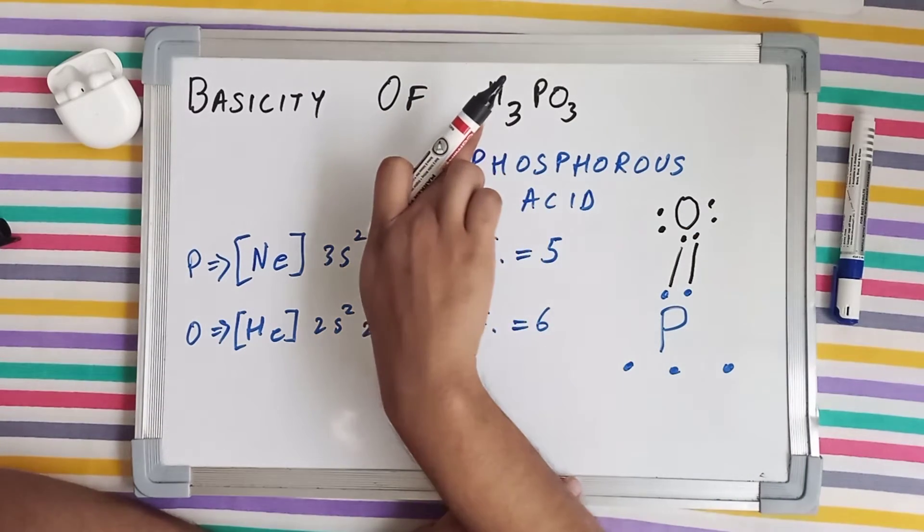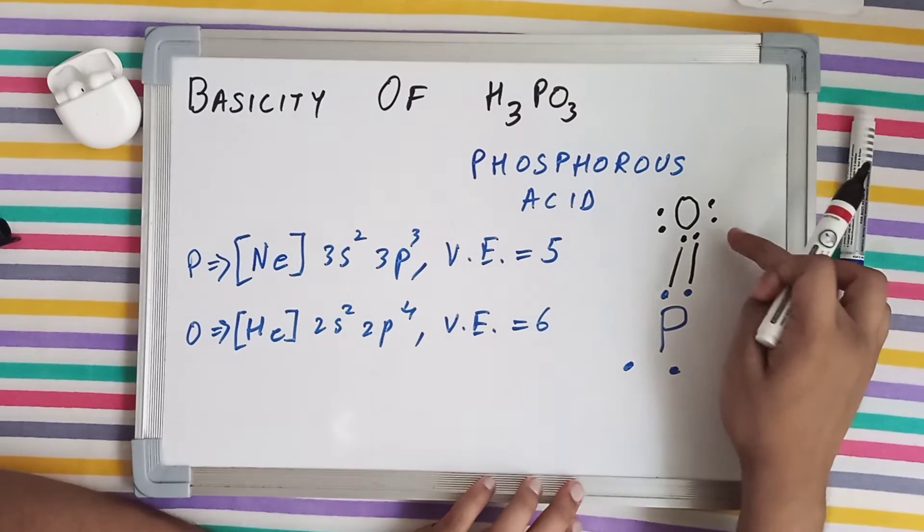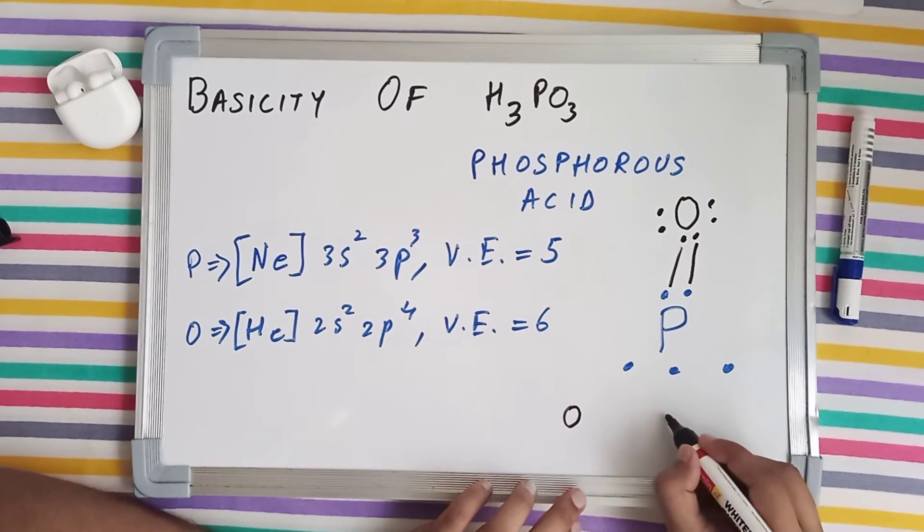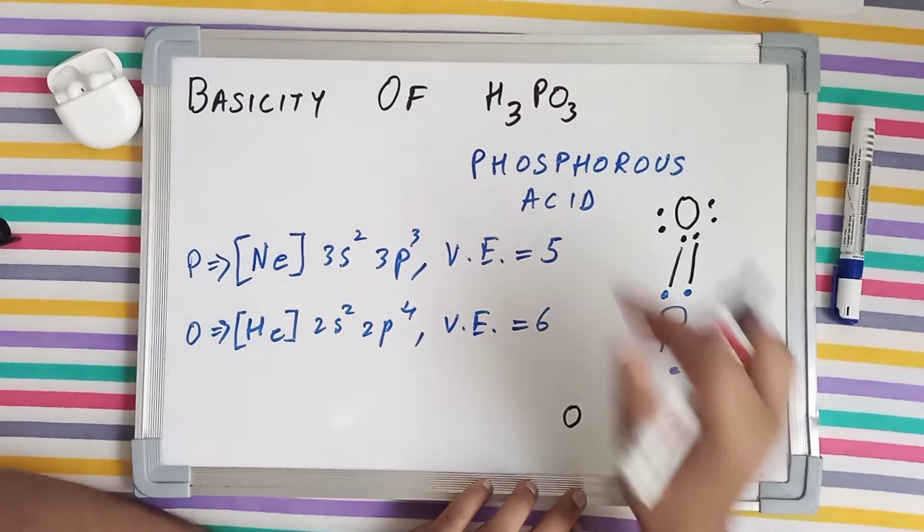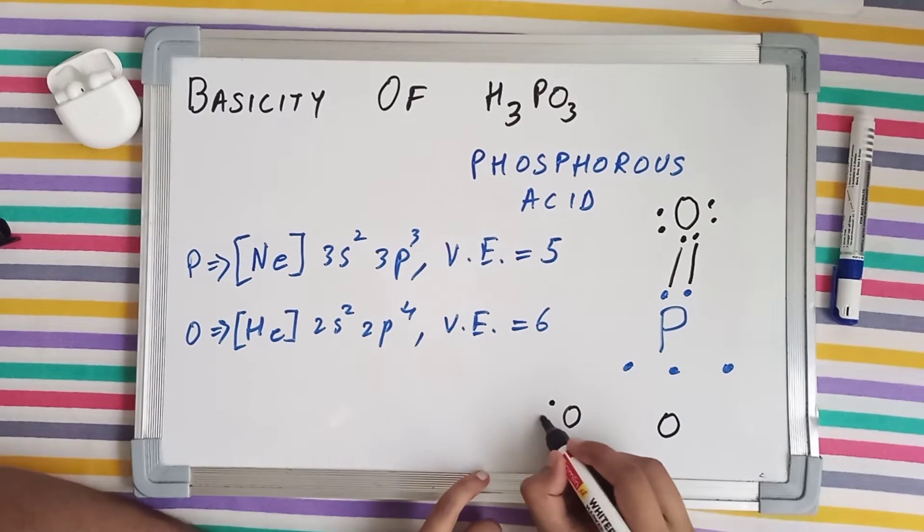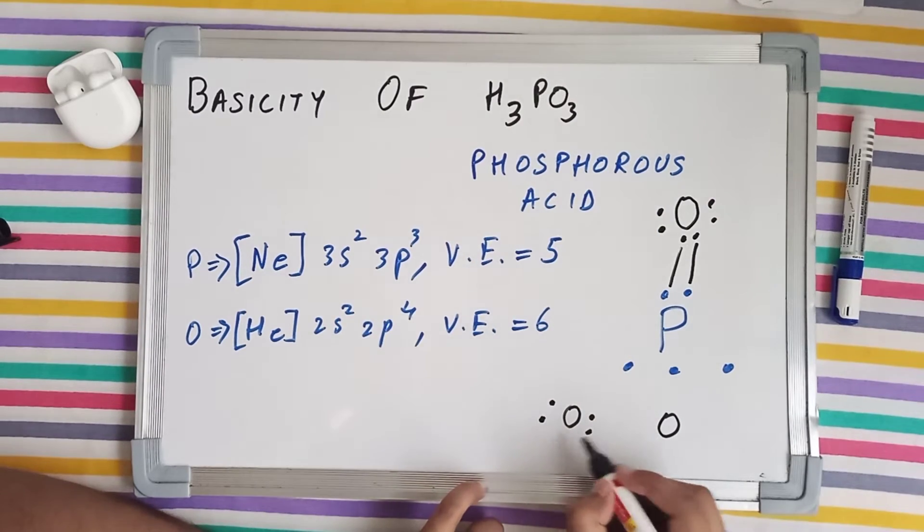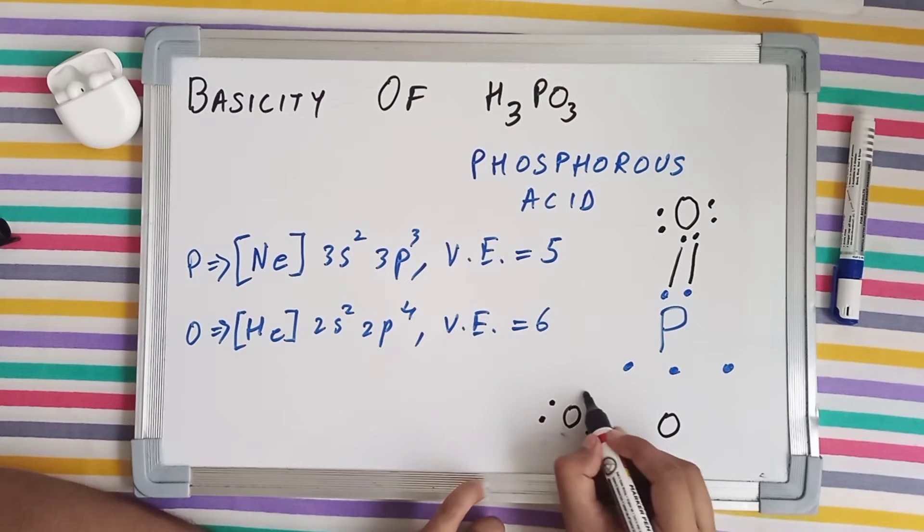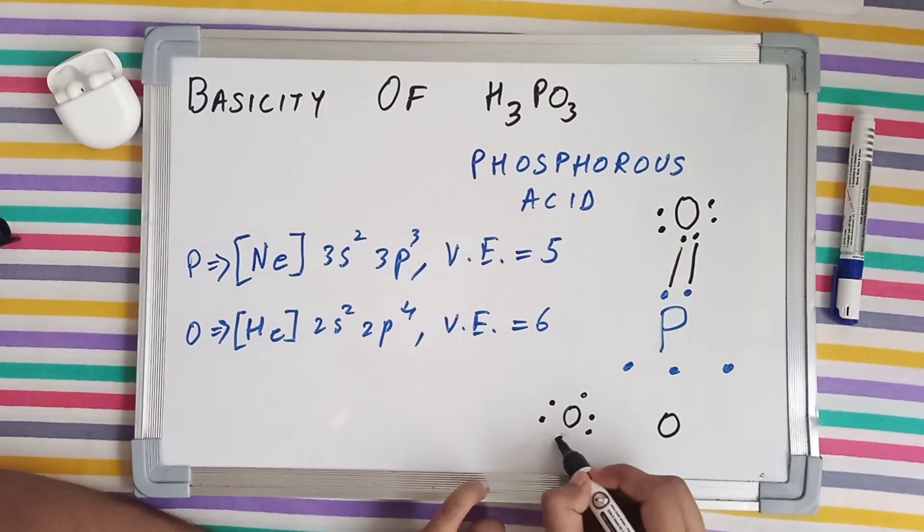Now I've got three hydrogens left and I've got two oxygens left. Now one oxygen here and the second oxygen here. I've got no more oxygens left, they're having six valence electrons: 1, 2, 3, 4, and 5 and 6.